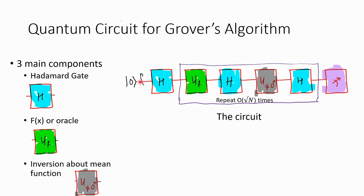It has a series of gates and starts with three main components: a Hadamard gate, f(x) or the oracle, and an inversion about mean function. I will specifically explain the implementation of each of them. You have an input which is all zeros — n inputs, so n zeros — and it applies a Hadamard gate.